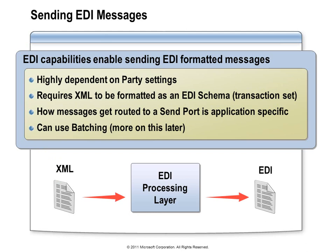When you're sending EDI messages, the party information is very important to understand how to take an XML document and turn it into the appropriate EDI document with all the information required for transaction sets, interchange numbers, and those sorts of things. There are also pieces specific to BizTalk that don't tie into EDI — for example, how a message arrives at a send port uses the standard BizTalk message routing and subscription model. But once that message arrives at the send port and gets into the processing pipeline, the EDI components will kick in and use that party information to process the message.